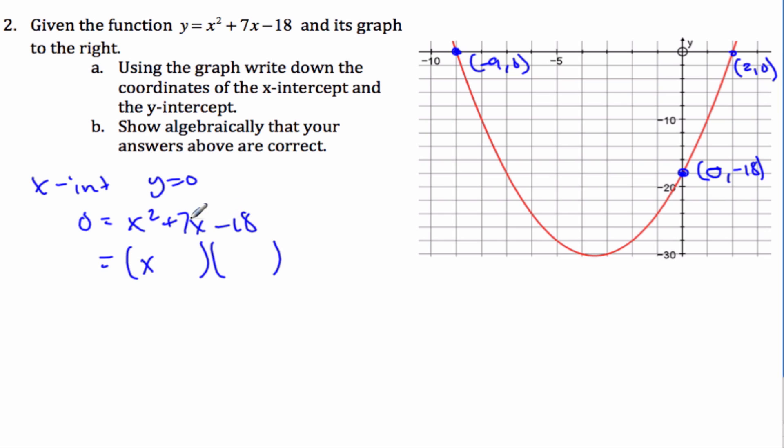And if I do this, multiplies to get -18, adds to 7, will be (x + 9) and (x - 2) equals 0. So they multiply to get -18, they add to get positive 7. And then I know x + 9 is 0, and x - 2 is 0. So x equals -9, or x equals 2.